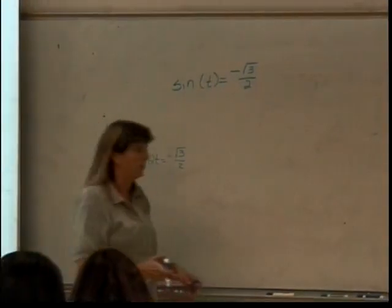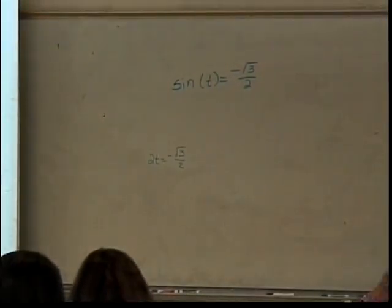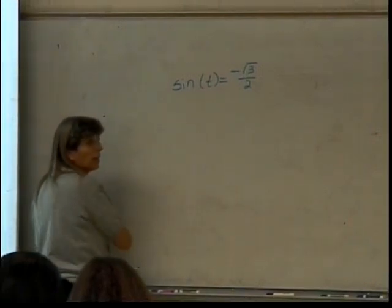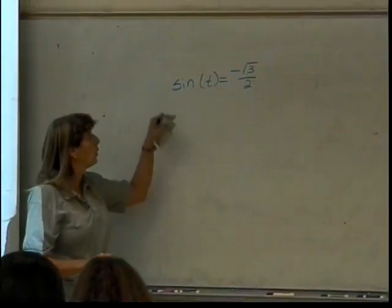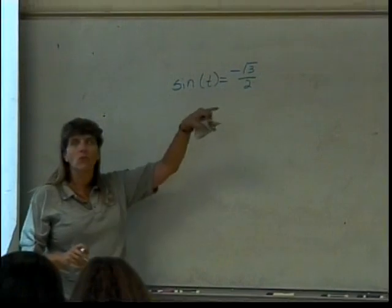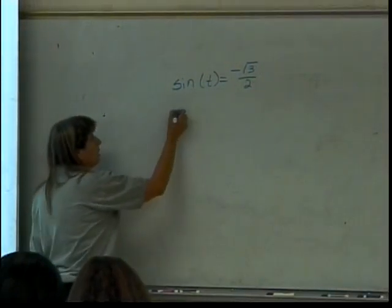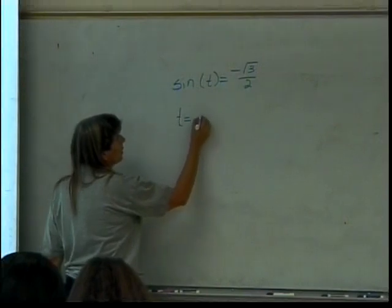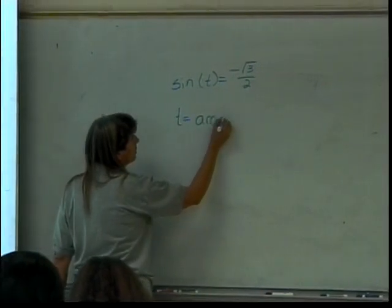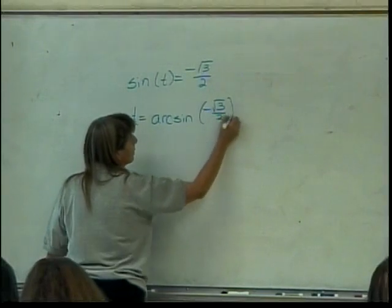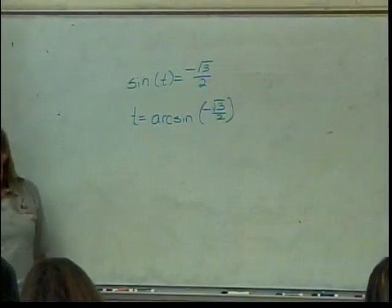All right, then. This doesn't say 2t. This says sine of t. Sine is a function, just like multiplying is a function. How do I undo? What is the inverse of this function? So, t is going to equal the arc sine or the sine inverse of the negative square root of 3 over 2.